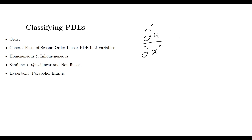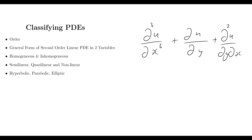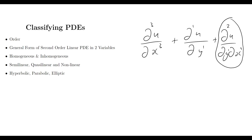Let's look at an example equation. Say we have (du/dx)^3 times du/dy, plus d²u/dy dx. Looking at the orders: the first term is third order, the next term is first order, and the last term is second order — even though it only has dy dx once on the denominator, we've differentiated twice. When terms of different orders are combined in one equation, we take the highest order, so this would be a third order PDE.